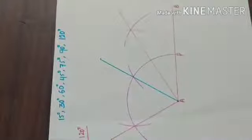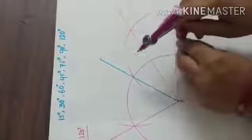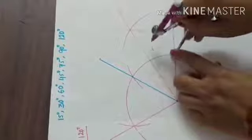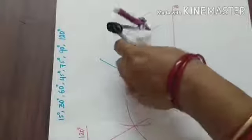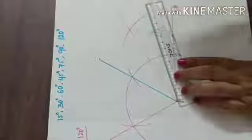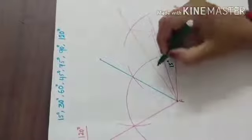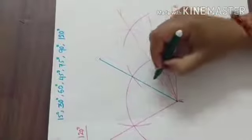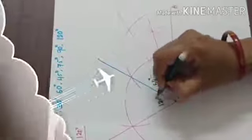Again if you want to draw 15 degree, you have to bisect 30 degree. Taking P as a center, draw an arc. Then taking the 30 degree point as center, draw another arc. If you join this line, you will get your 15 degree. So this angle measures 15 degree, this angle measures 30 degree, this angle measures 60 degree, and this angle measures 120 degree.